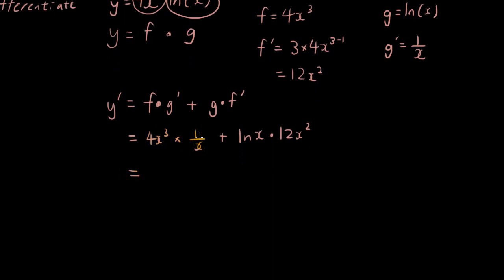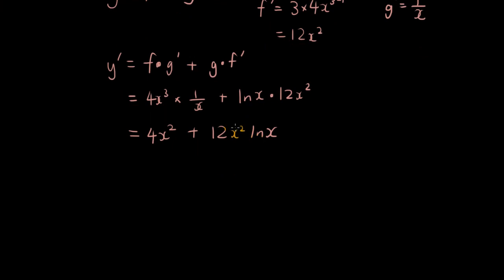So now how do I simplify this? Well, 4 x cubed times 1 over x, the x cubed and the x at the bottom, you can simplify that into 4 x squared plus 12 x squared ln x. Now you can simplify that further because you can see there is an x squared in both of these functions. So let's take out the x squared, let's take out the 4, so then it becomes 4 x squared bracket 1 plus 3 ln x.